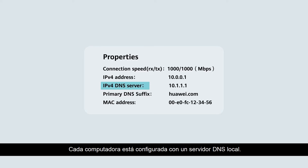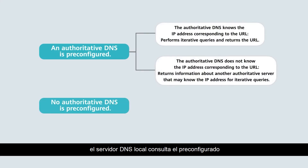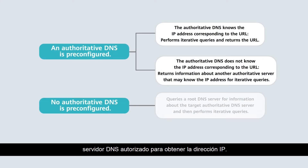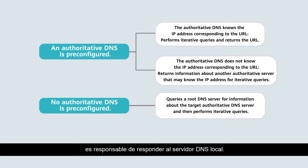Each computer is configured with a local DNS server. When a website address needs to be translated into an IP address, the local DNS server queries the pre-configured authoritative DNS server to obtain the IP address. Sometimes multiple queries are involved in obtaining the desired IP address. The pre-configured authoritative DNS server is responsible for responding to the local DNS server.